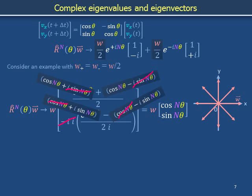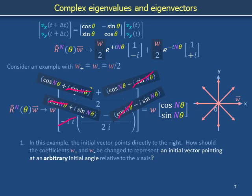For the particular initial condition studied here, the components of w are purely real. All the imaginary i stuff went away. How should the coefficients w_+ and w_- be modified to represent an initial vector pointing at an arbitrary initial angle relative to the x-axis? Can you plot the eigenvectors 1 ± i on the xy plane? Why not?